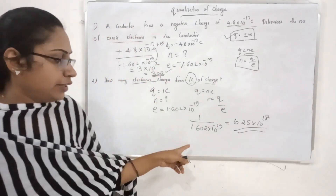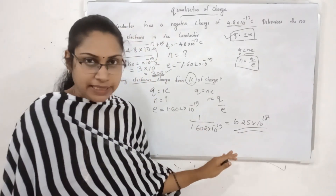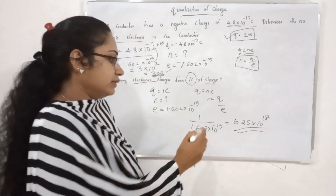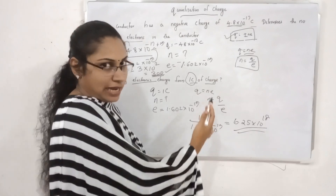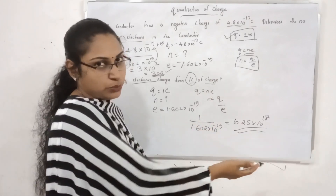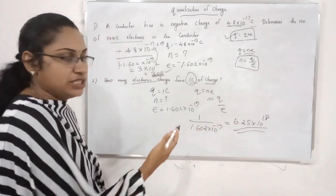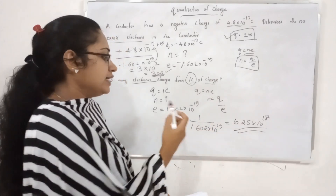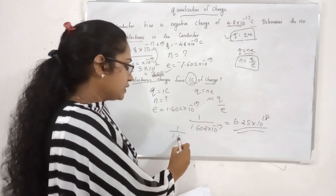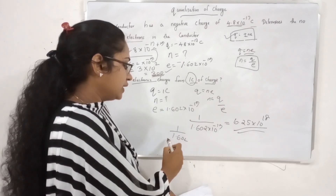The number here has no unit. If I just calculate it: 1 divided by 1.602 gives approximately 6.25 × 10¹⁸ electronic charges per coulomb.